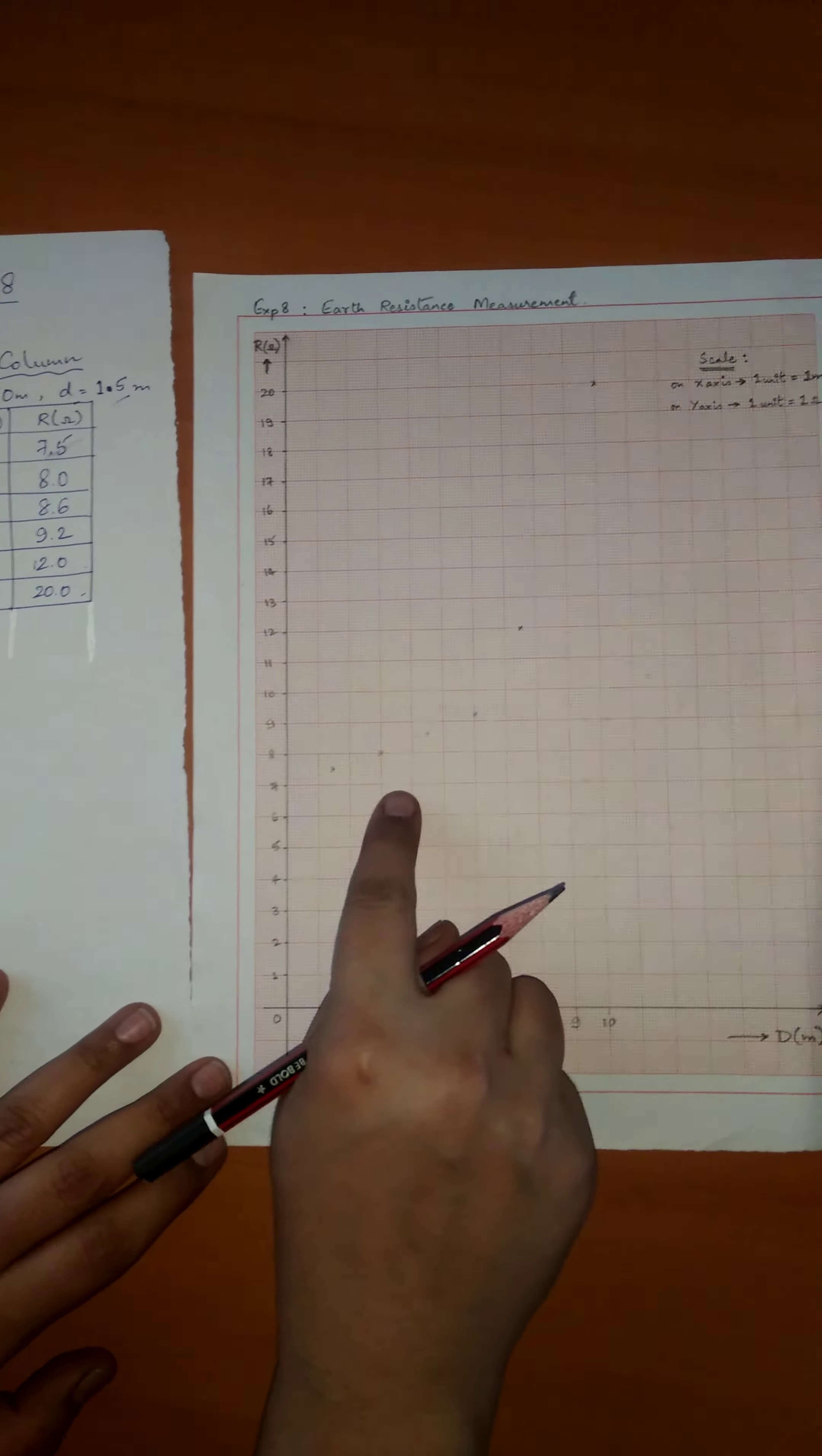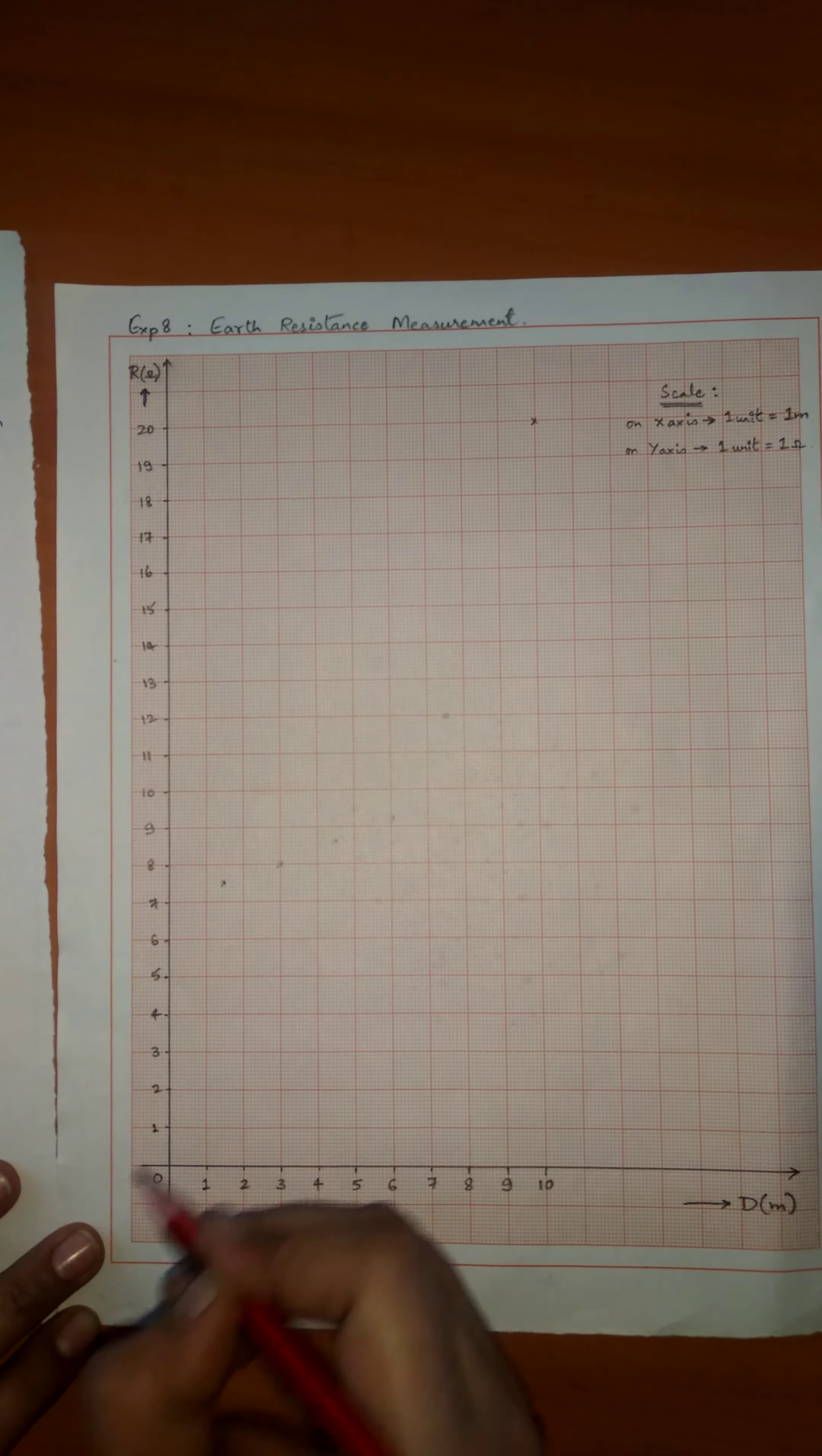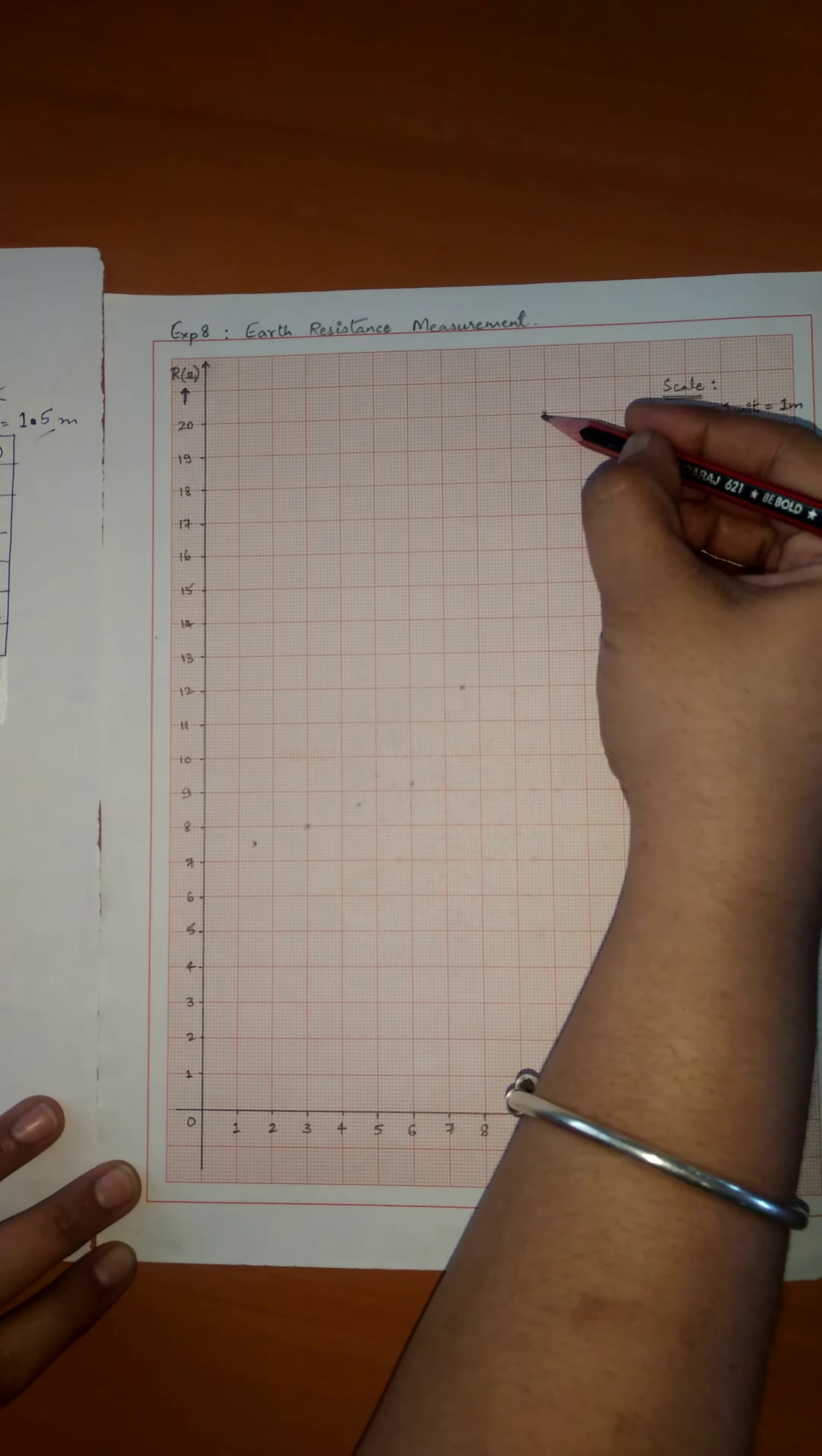Once all the points are marked in the graph sheet, use a freehand drawing and connect all the joints from 0 till the 20th ohm.